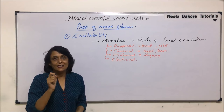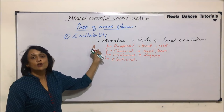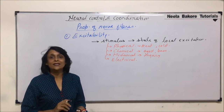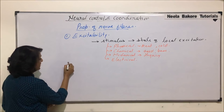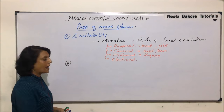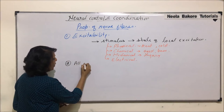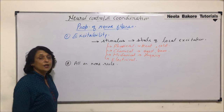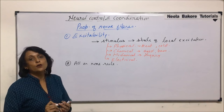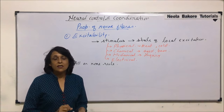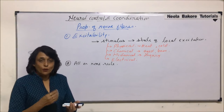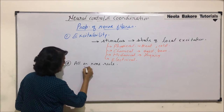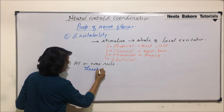The second property of nerve fiber is known as the all or none rule. Before explaining that, let us talk about threshold stimulus. The threshold stimulus is a stimulus of a particular strength at which the nerve fiber would get excited.